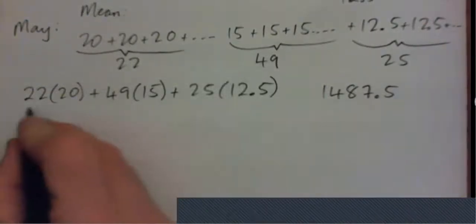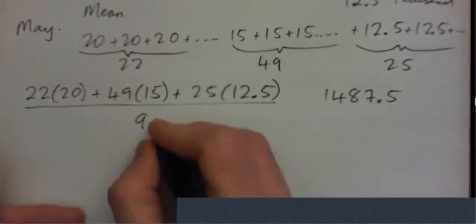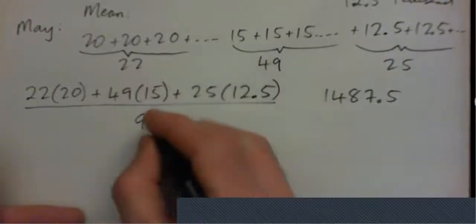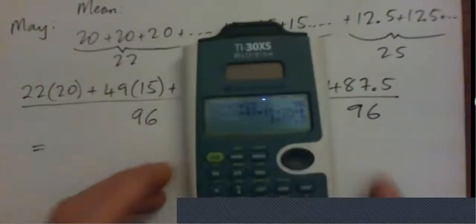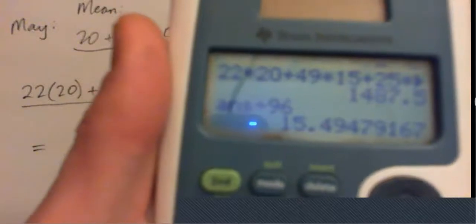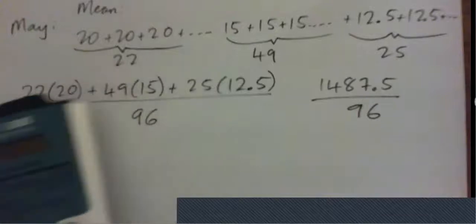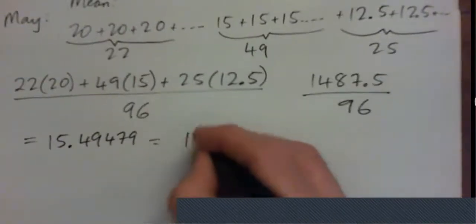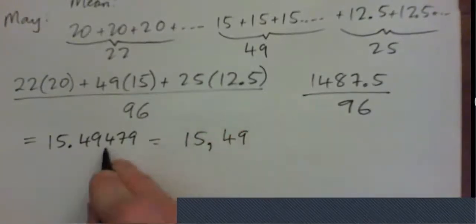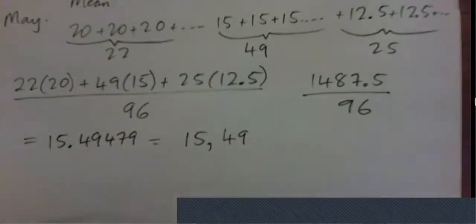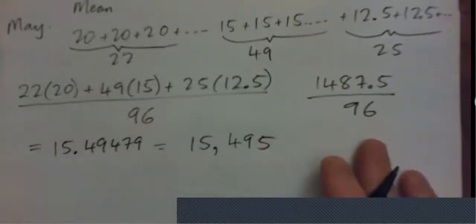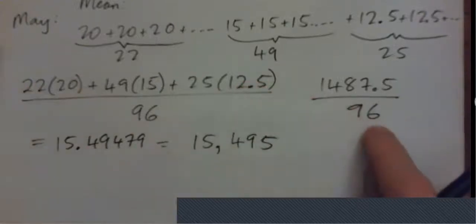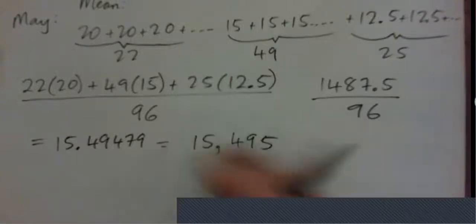That's in thousands, by the way. Divide by 96 cars total, and we get 15.49479... in thousands, so it's actually $15,494. Rounding to the nearest dollar, the mean for May is $15,495. This is like the average — the typical price of a car sold this month.